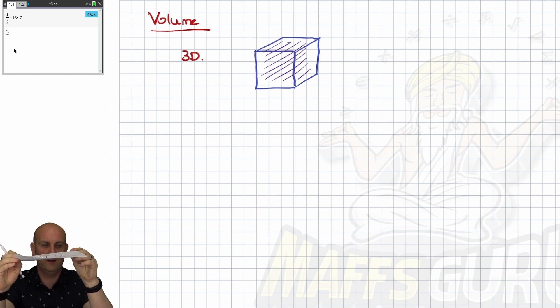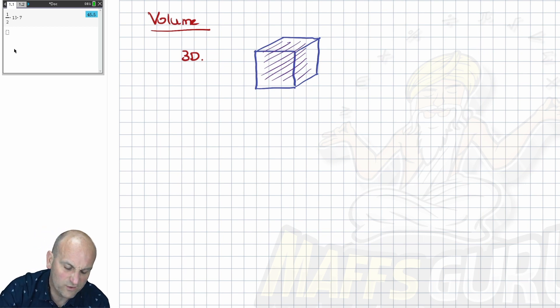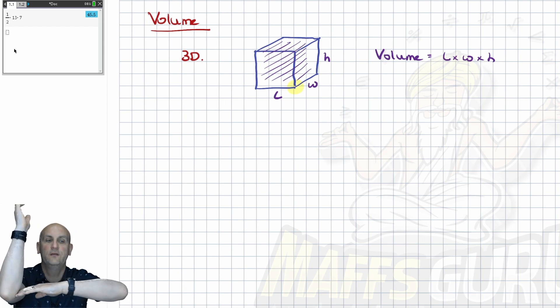So, we could call this L, W, and H if you wanted to. And so, traditionally we'd have volume is equal to length times width times height. I hate L because it looks like a one. I don't think of it that way. I'm going to go back and once again, I'm going to choose one corner of my shape. So, when I try and find the volume, I choose one corner. And I do that times that times that.